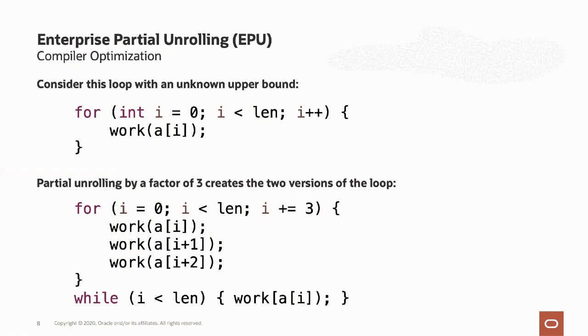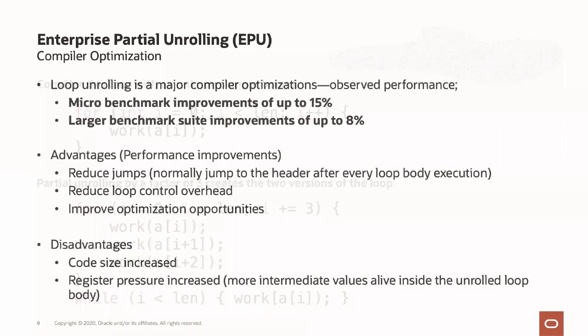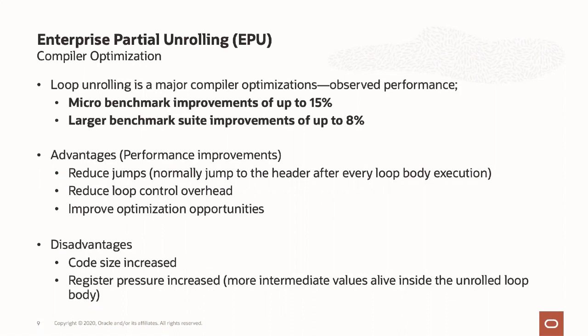One thing we do emphasize is that when working with Java applications, you should use the abstractions available in Java — use streams, use all the abstractions — because it gives the compiler a lot more room to optimize behind the scenes. This is a case where we're actually optimizing a fairly low-level loop operation. The result is that the code runs faster: micro benchmarks show up to 15% performance improvement, which is fairly significant. On larger suites we've seen up to 8%, and it really depends on the workload.